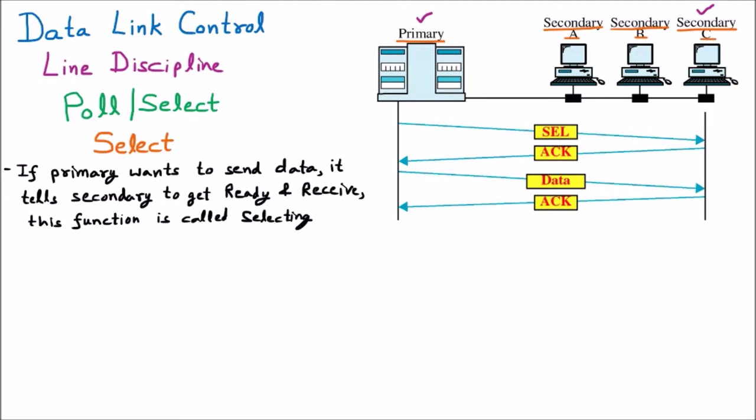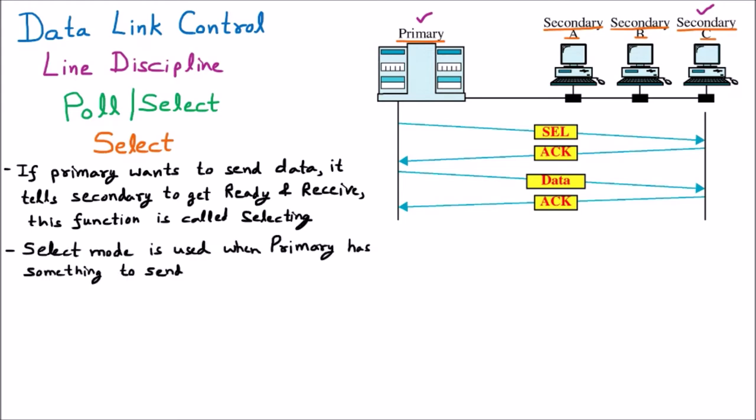Primary is selecting C so that it can send data to C. Primary also wants C to reply with a positive acknowledgement. The select mode is used when the primary device has something to send — if primary has data and wants to send it to a specific secondary like secondary C, this select mode is used.